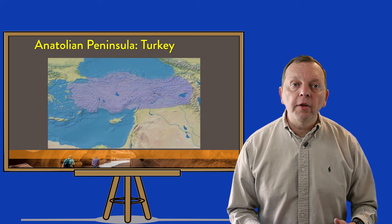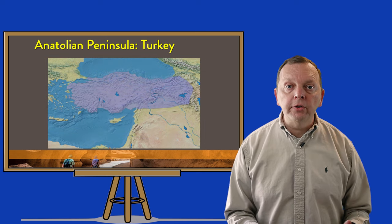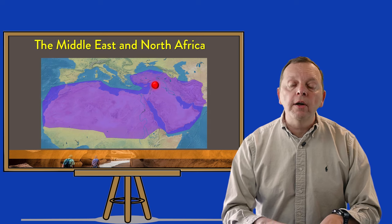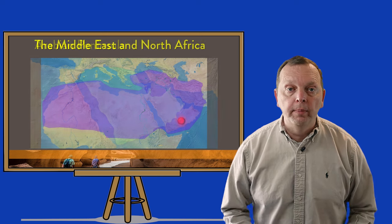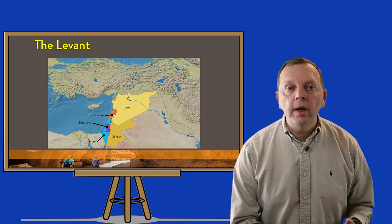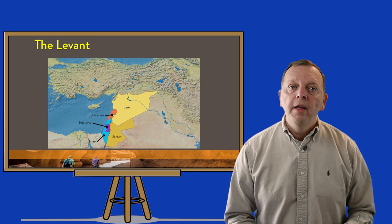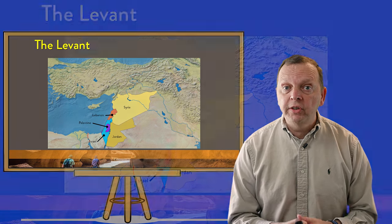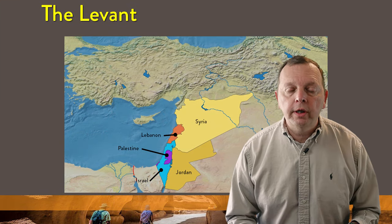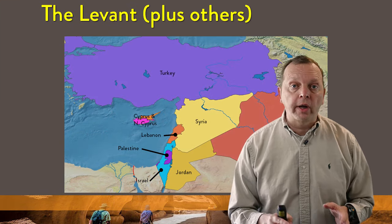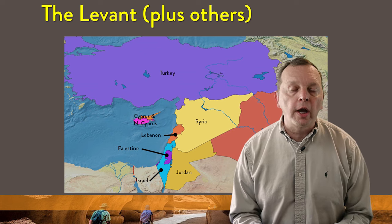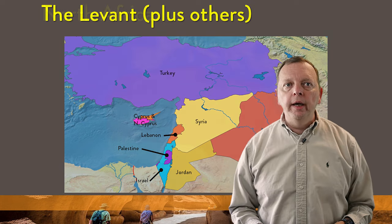From north to south, the Middle East includes the Anatolian Peninsula, which makes up most of the country of Turkey, and stretches down to include the countries of the Arabian Peninsula. Moving back to the Mediterranean coast, we find a sub-region known as the Levant. This region includes countries such as Syria, Lebanon, Jordan, Israel, and Palestine, and could also be used to describe Turkey, Iraq, and the island of Cyprus.